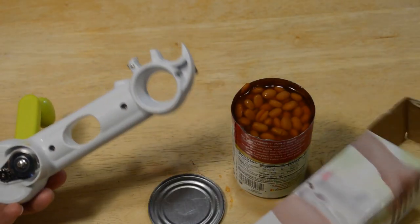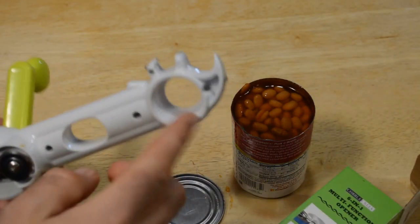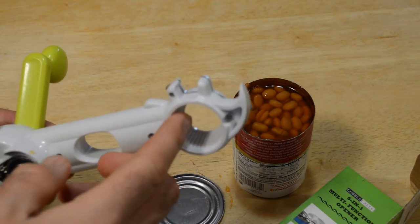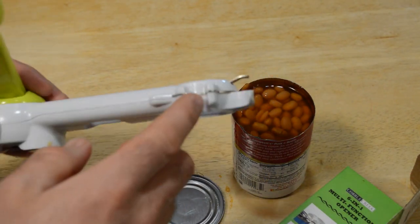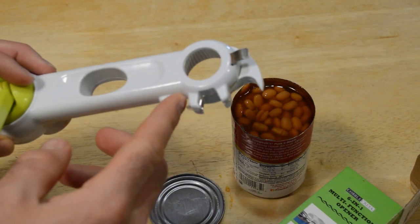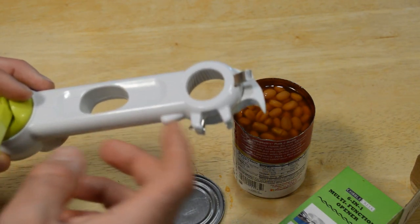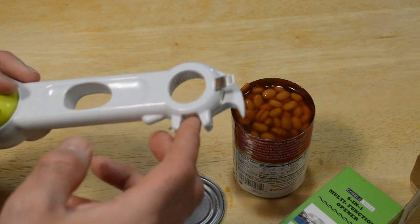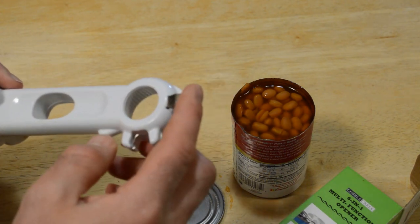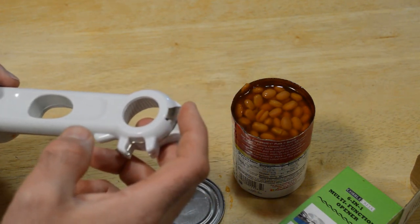So yeah, it has a can opener here. It has the twist to open bottles right there. This is right here, pop off bottle tops. This is the easy jar opener. This thing is the easy tab.